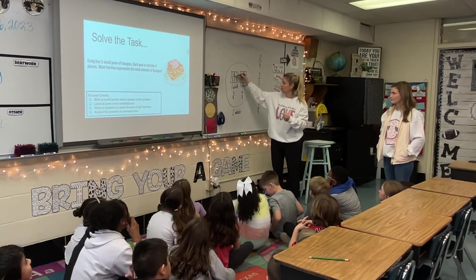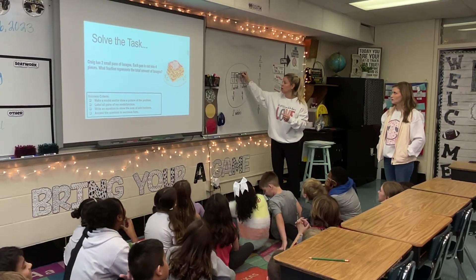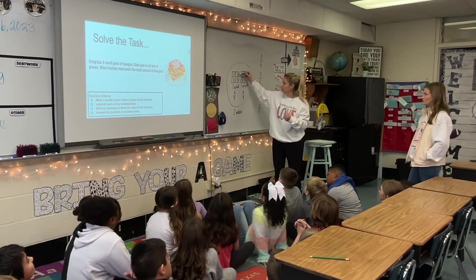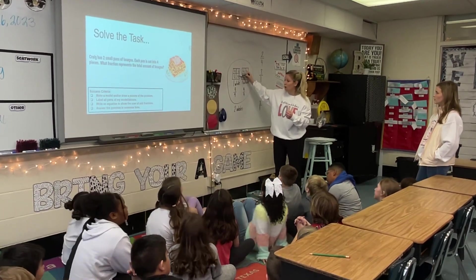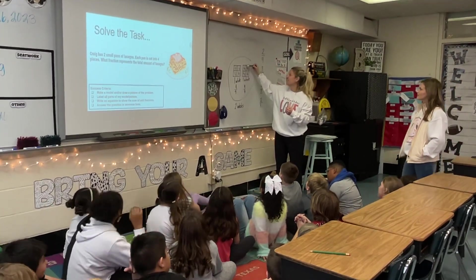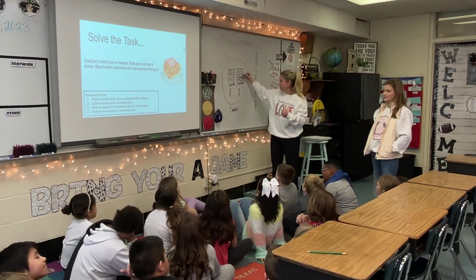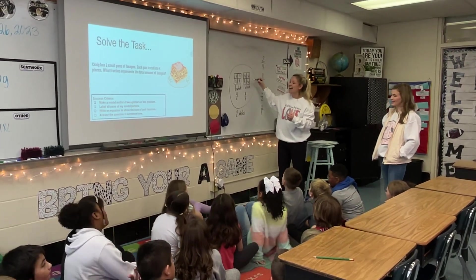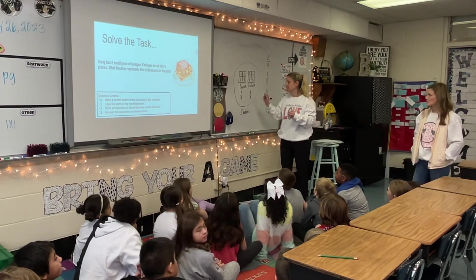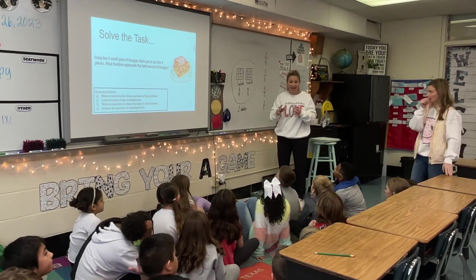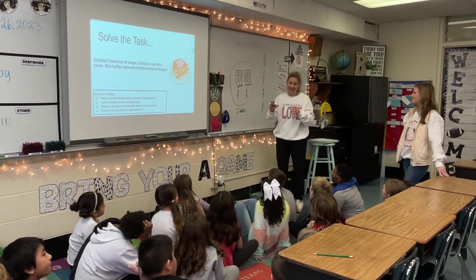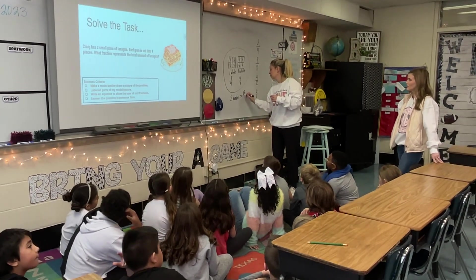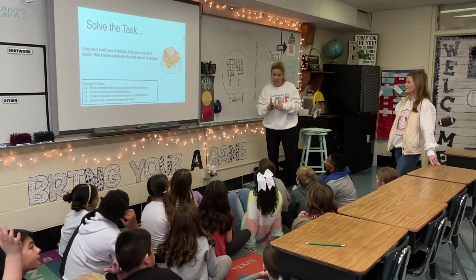How many fourths? Let's count them. Ready, go. One one-fourth, two one-fourths, three one-fourths, four one-fourths, five one-fourths, six one-fourths, seven one-fourths, eight one-fourths. So what is the fraction if you ate both pans? Eight-fourths.